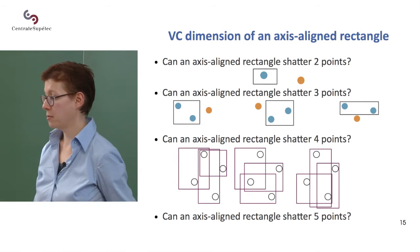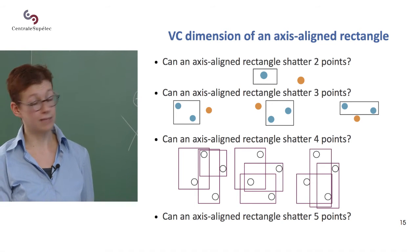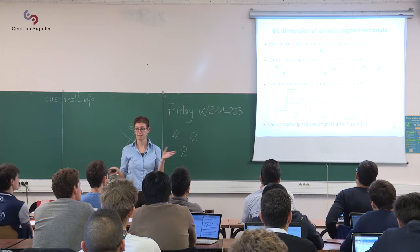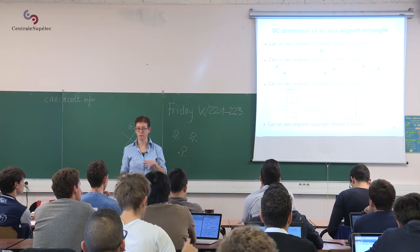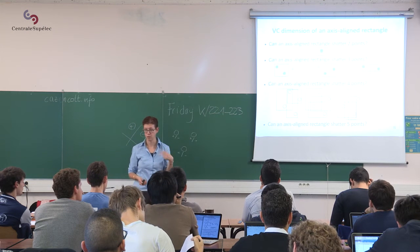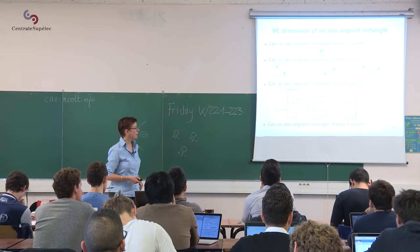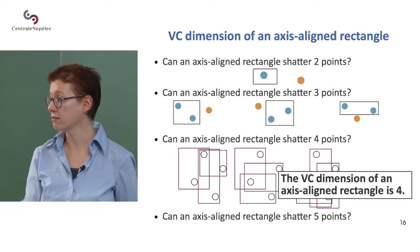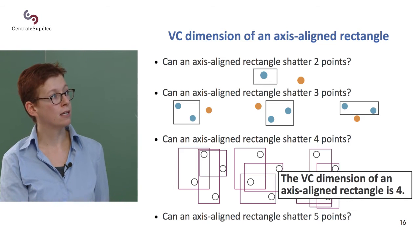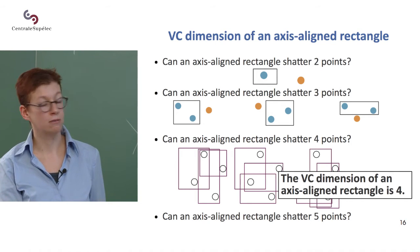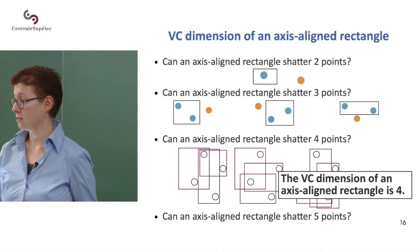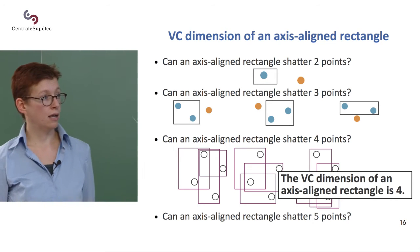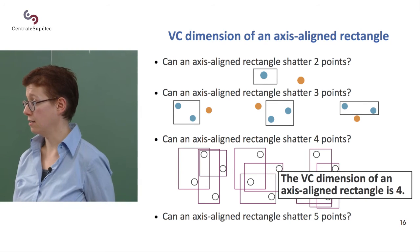It is possible to shatter four points if you position them appropriately. Separating three from one is generally easy, and when all points are the same class it's also easy. The hard case is two versus two. These are all the rectangles that separate two of those points from two of the others. For each rectangle, you color the points inside one color and outside the other, giving all possible labelings — so the rectangle shatters these four points.